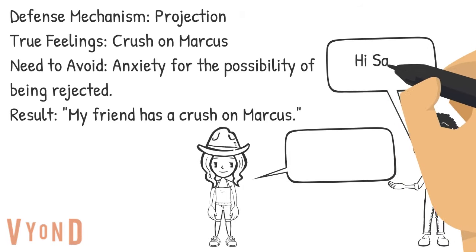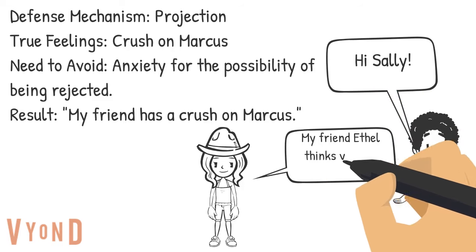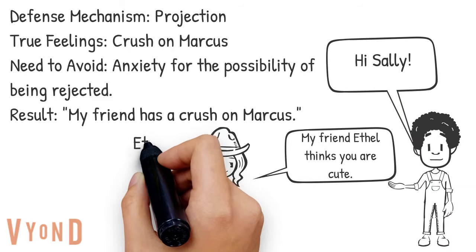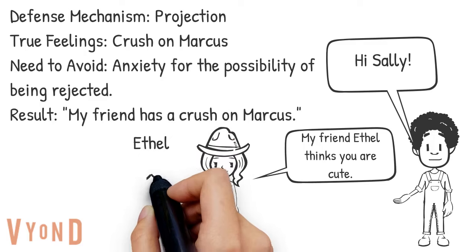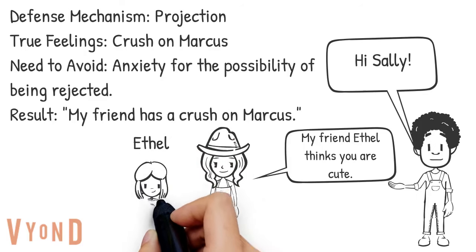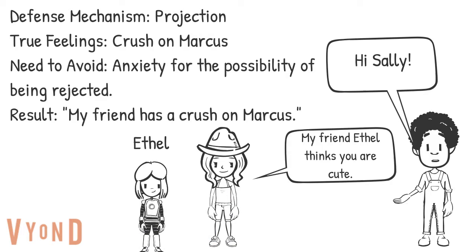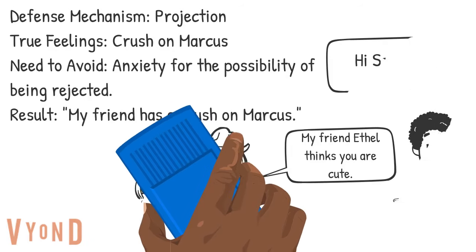Another defense mechanism is projection. Projection is taking your true feelings and projecting them, or saying that is how someone else feels. For example, if Sally tells Marcus that her friend Ethel has a crush on him, she would be projecting her attraction toward Marcus onto her friend Ethel.